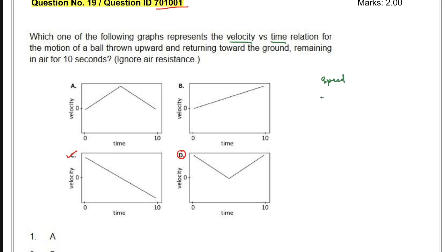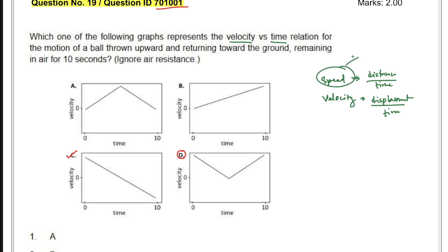There are two things in physics: speed and velocity. Speed is distance divided by time and is always positive. Velocity is displacement divided by time, and velocity can also be negative.